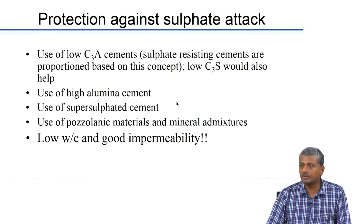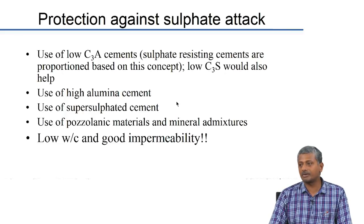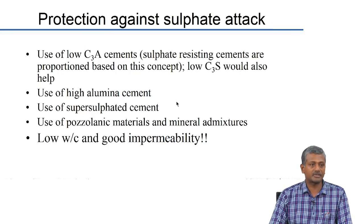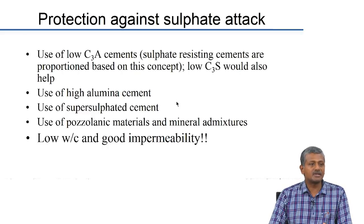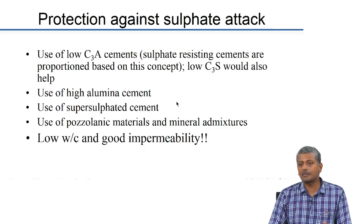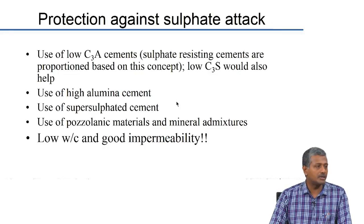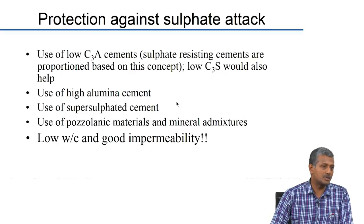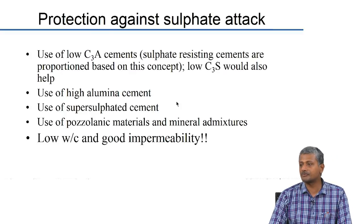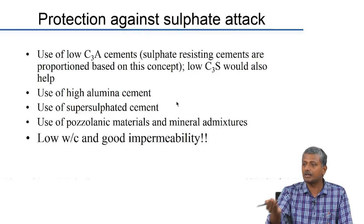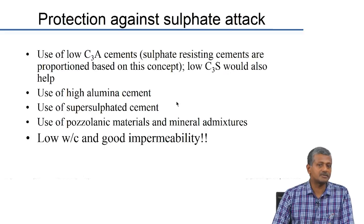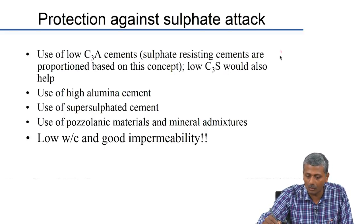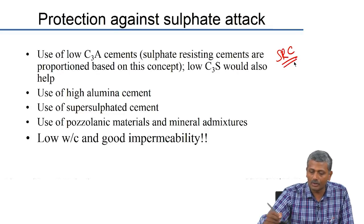Regarding means of protecting mortars or concretes against sulphate attack: the first and foremost is the use of low C3A cements. We have seen the clear link between expansion and ettringite formation. Low C3A cements change the chemistry so that primary ettringite formed in early hydration remains stable throughout, and does not convert to monosulphate which has a tendency to reconvert to ettringite when external sulphates enter the concrete. Low C3A cements form the basis for sulphate resistant cements (SRC).